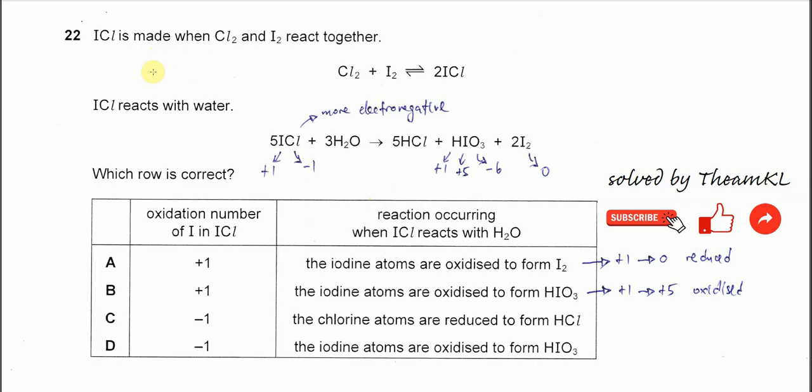Question 22. ICL is made when the chlorine and iodine react together as shown in this equation. Chlorine with iodine form this compound.